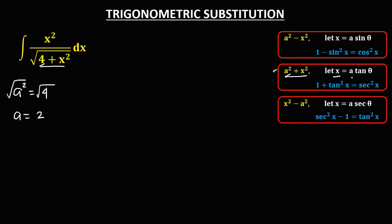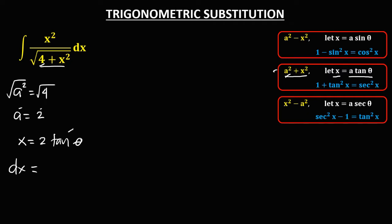For this equation we let x equal a tangent theta, so since a equals 2 we have x equals 2 tangent theta. To find the derivative of x, since the derivative of tangent theta is secant squared theta, we have dx equals 2 secant squared theta d theta.